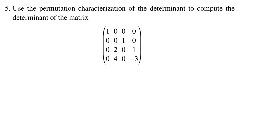In the permutation characterization, what we have to do is, in all possible ways, choose one element from each row and each column. For example, I could choose the 0 from here, the 1 from there. I then multiply these together, which in this case gives me 0. Now there's a little tweak — you have to assign this number a positive 1 or negative 1, called the sign of the permutation. But as soon as you choose a 0, when you multiply it, you're going to get 0 regardless.